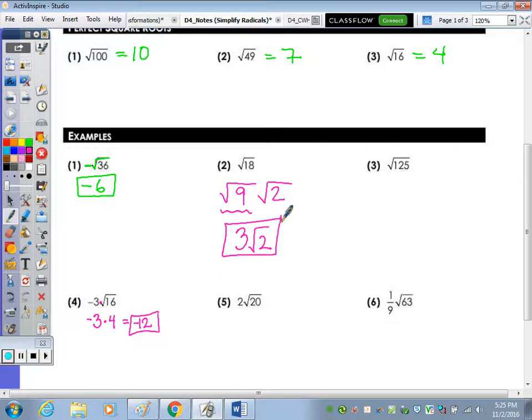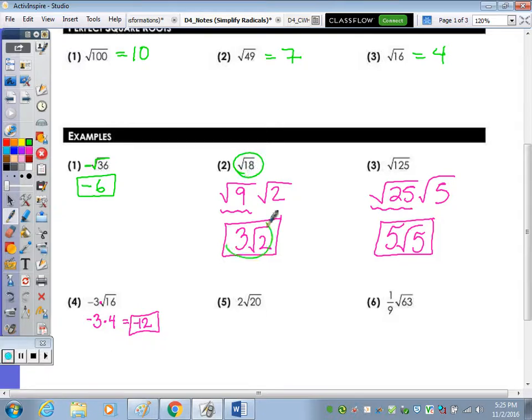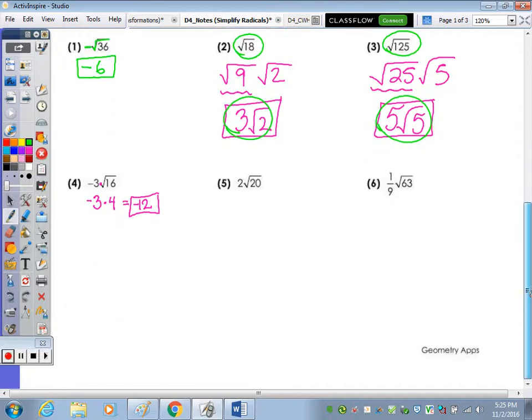125, it's got 25 in it, so we divide it by 25 and it goes in 5 times. So this is 25 times 5, which we take the square root of 25. Final answer is 5 radical 5. Now, if you type the decimal in the calculator, if you type the radical in, so type in radical 18, you type in 3 radical 2, the decimals should match. Same for the square root of 125 and 5 radical 5, your decimals should match.